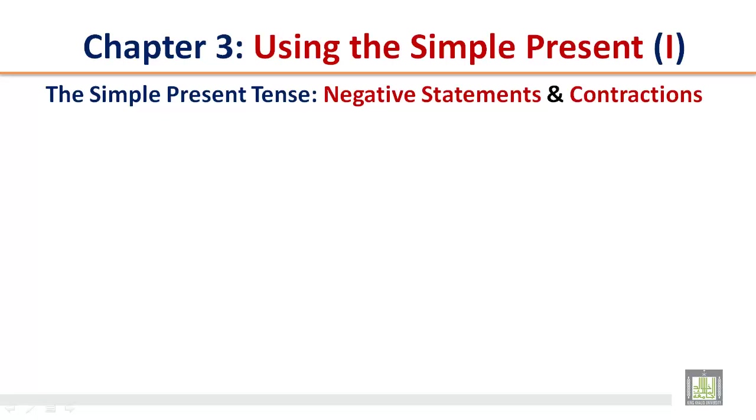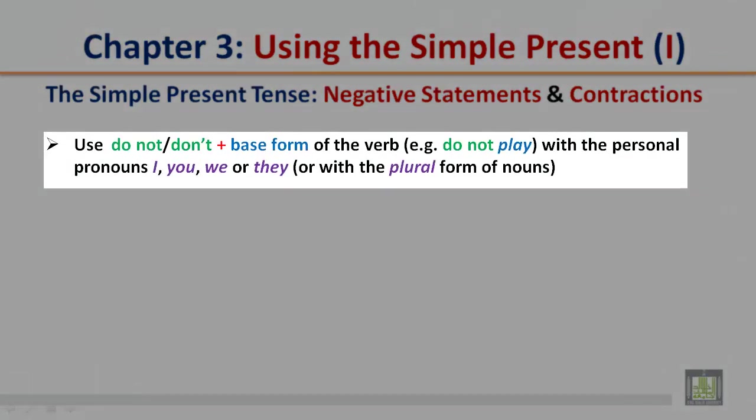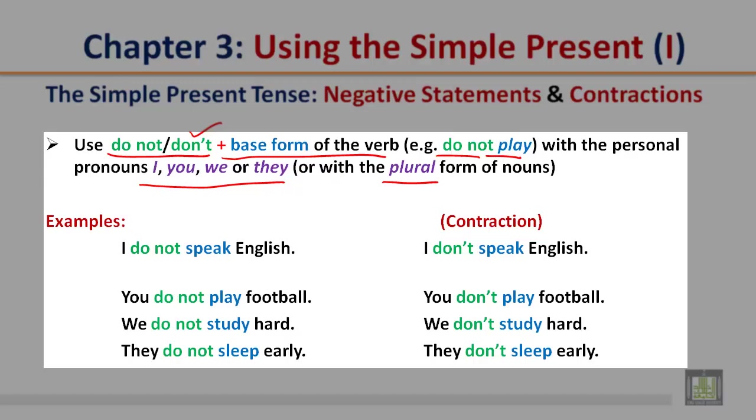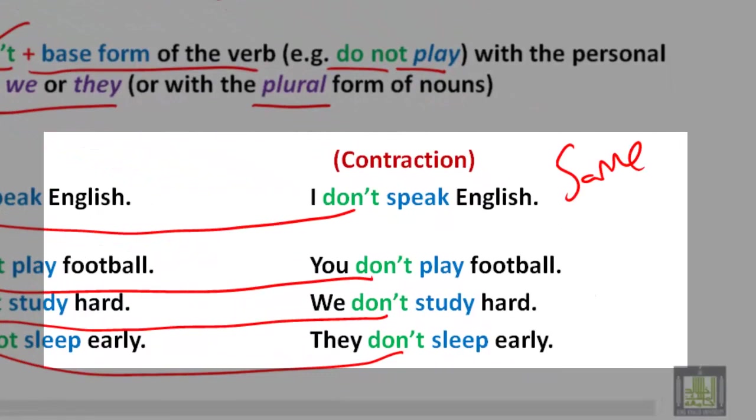The simple present tense: negative statements and contractions. Use do not or don't plus the base form of the verb. The base form is play, so do not play with the personal pronouns I, you, we, or they, or with the plural form of nouns. Don't is a contraction of do not. Examples: I do not speak English. With the contraction, I don't speak English. You do not play football. With the contraction, you don't play football. We do not study hard. With the contraction, we don't study hard. They do not sleep early. With the contraction, they don't sleep early. These have the same meaning.